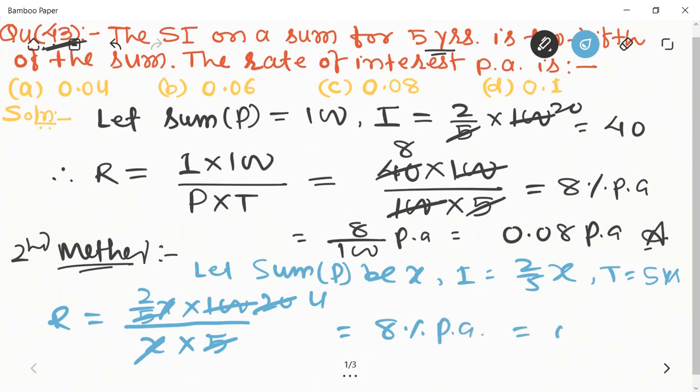Eight percent per annum, which equals 0.08 per annum, which is the required answer. Option C is the correct answer. Thank you.